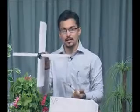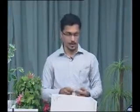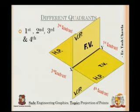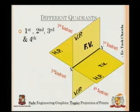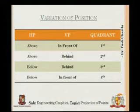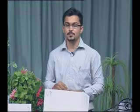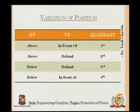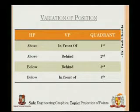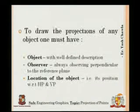This line is basically the Y-axis and this line is the X-axis, as shown by the thermocol piece we are using. In the first quadrant, the front view is on VP and the top view is on HP, illustrated as FV and TV in the figure. In the first quadrant, the object is above HP and in front of VP; in the second, above HP and behind VP; in the third, below HP and behind VP; and in the fourth, below HP and in front of VP.